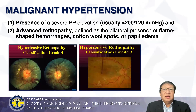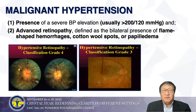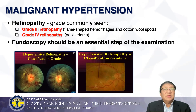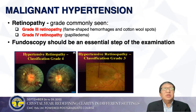Malignant hypertension typically occurs in patients with very high BP elevations of more than 200/120. They present with advanced retinopathy, defined as the bilateral presence of flame-shaped hemorrhages, cotton wool spots, or papilledema. What we usually see is grade 3 retinopathy — flame-shaped hemorrhages and cotton wool spots — and grade 4 retinopathy, which is papilledema. Fundoscopy is an essential step of the examination and is often missed.